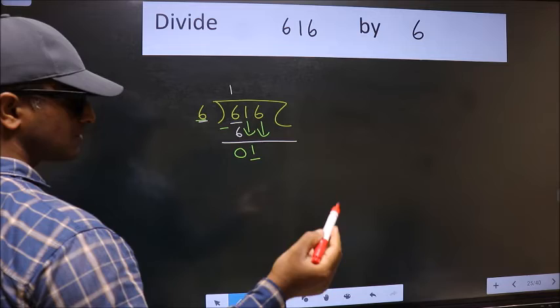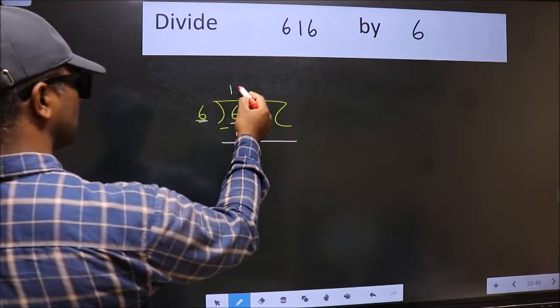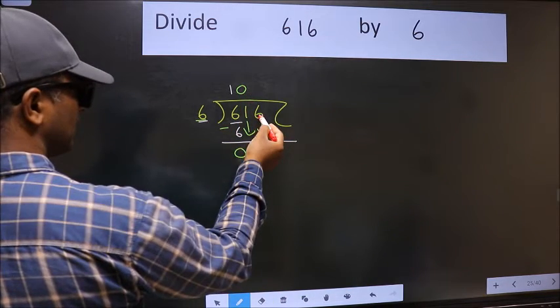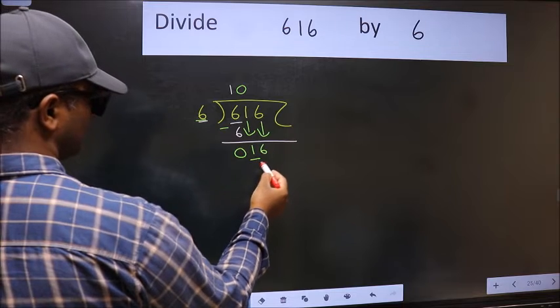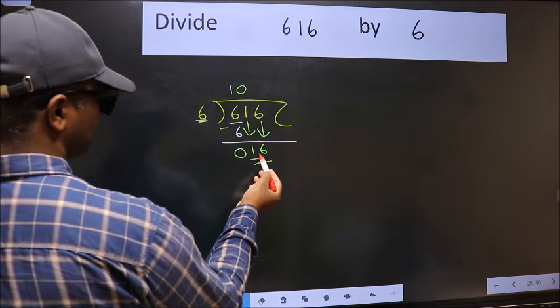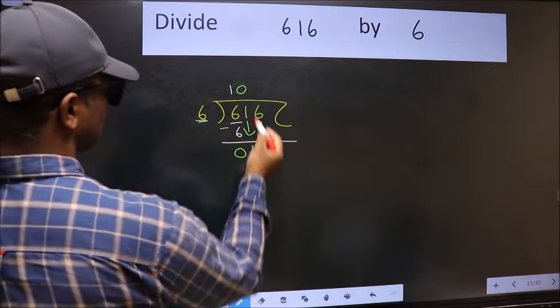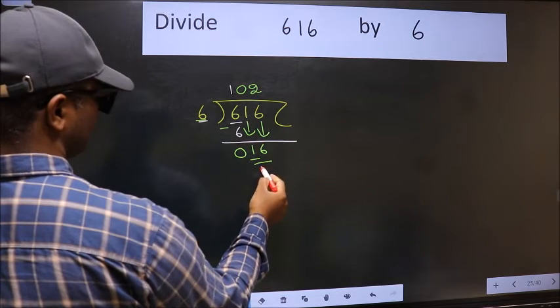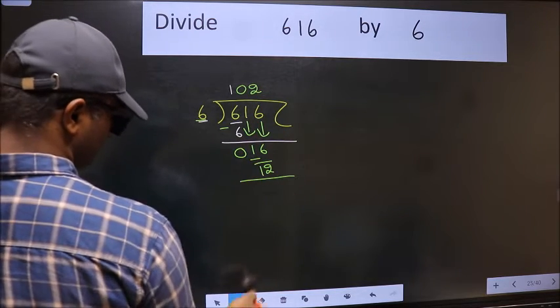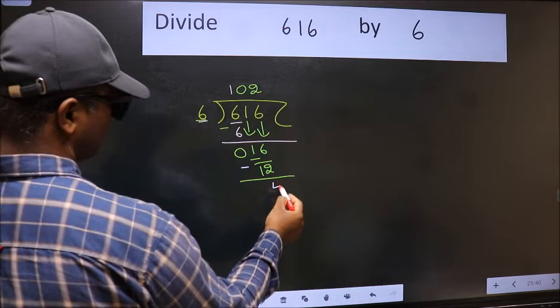And the rule to bring down the second number is we should put 0 here. Then only we can bring this number down. Now 16. A number close to 16 in the 6 table is 6 times 2 equals 12. Now we should subtract. We get 4.